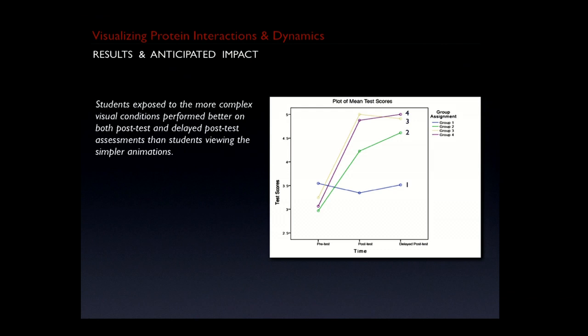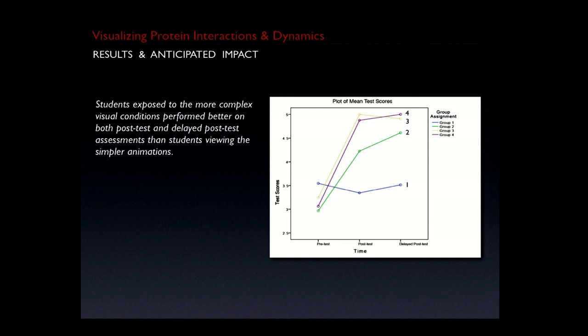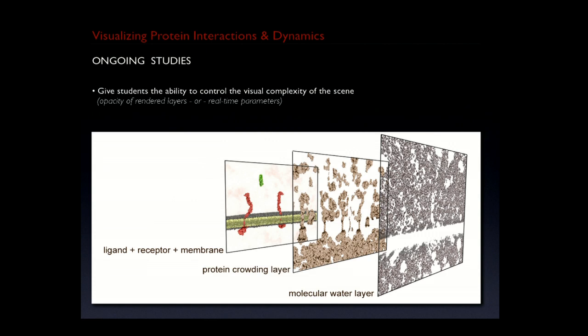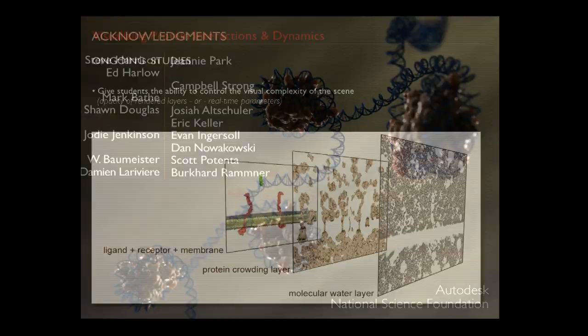The next step with Jody is to add eye-tracking data to gain a better understanding of cognitive overload — what are the students actually looking at in version four? Is their eye all over the place, or does our use of color still allow them to follow the main actors despite the additional action? Eventually, the real version we're going for is not versions 1, 2, 3, or 4, but a composite version that gives students interactive control over the visual layers — letting students dial in the amount of Brownian motion or the amount of water depicted.